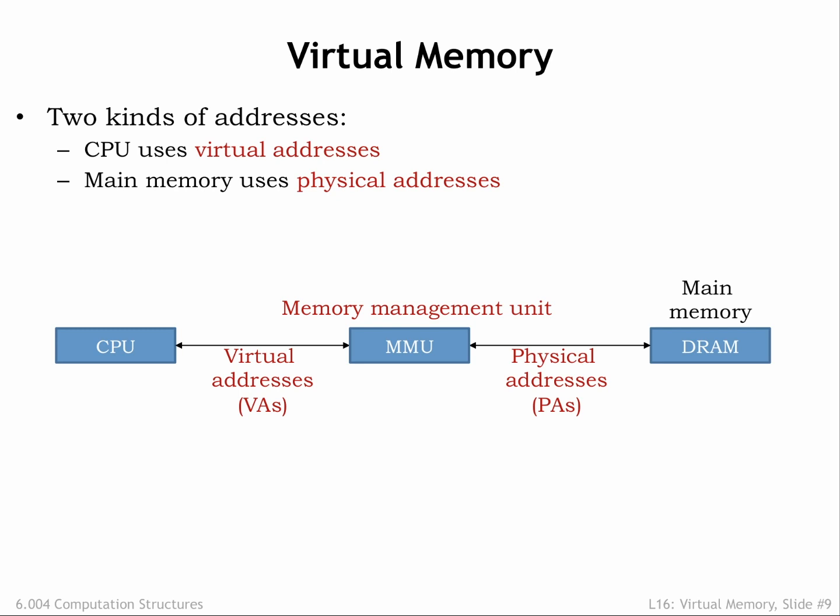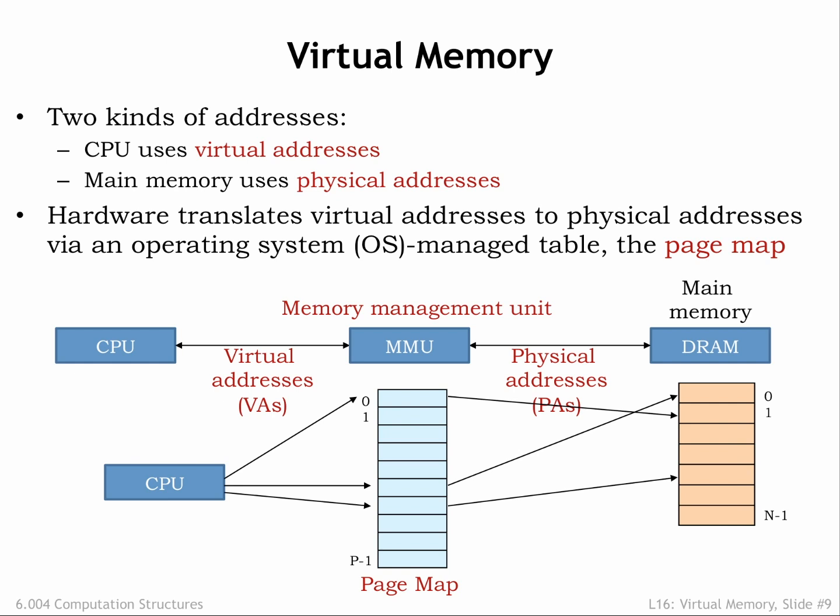But wait — doesn't the cache go between the CPU and main memory? You're right, and at the end of this lecture we'll talk about how to use both an MMU and a cache. But for now let's assume there's only an MMU and no cache. The MMU hardware translates virtual addresses to physical addresses using a simple table lookup.